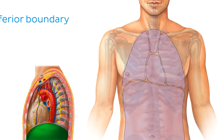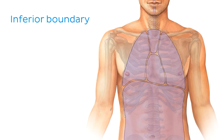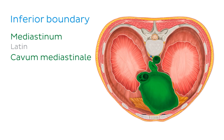And finally, the inferior boundary of the mediastinum is formed by the respiratory diaphragm, which you can see just over here. To give our borders a little more context, let's take an alternative look at the mediastinum by looking at the diaphragm from a superior perspective. Here you can get a better idea of the space occupied by the mediastinum.